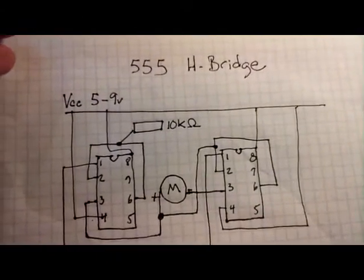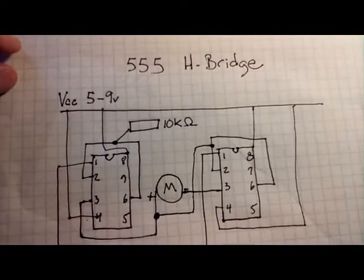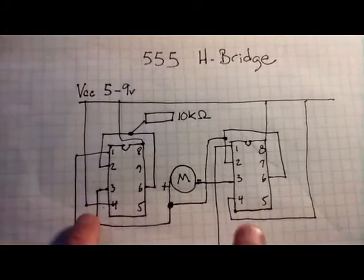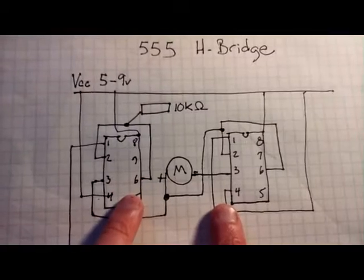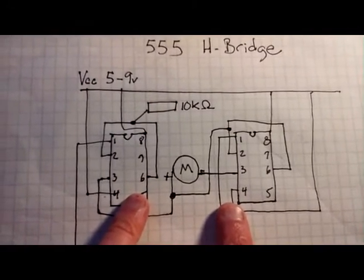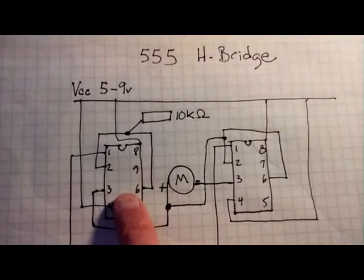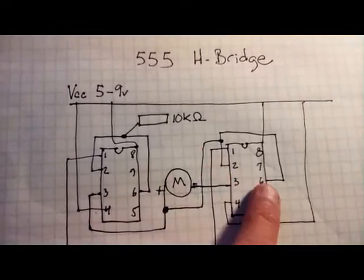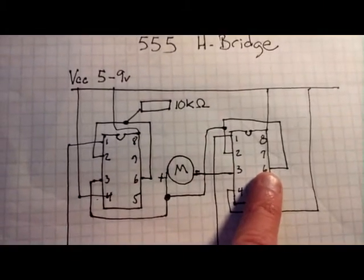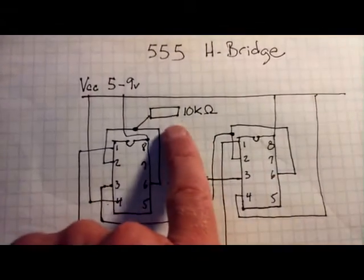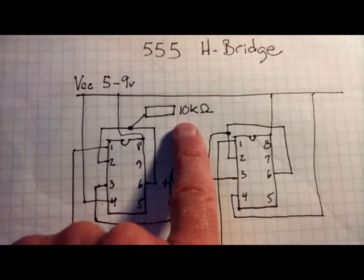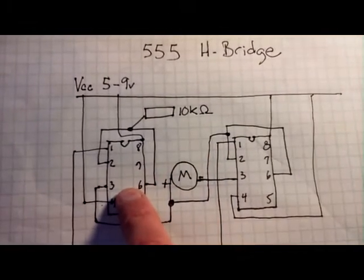So before we fire up the circuits, let's check out the schematics. On the 555, we've got two 555 IC chips. And the trigger and thresholds, pins 2 and 6, are connected on each chip. And in combination with the 10K potentiometer, that's where the magic happens.